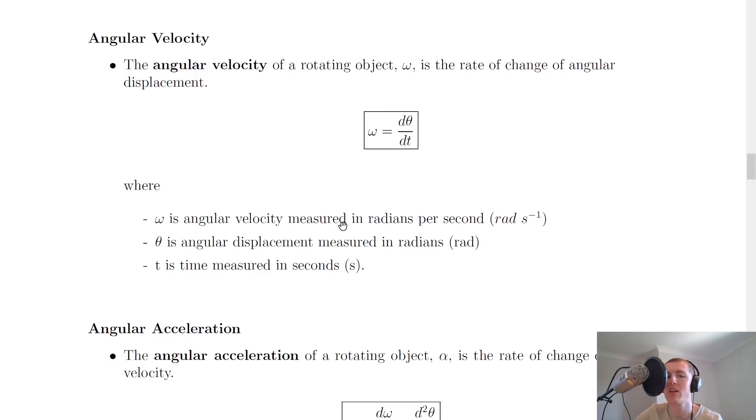So we have that omega is the angular velocity measured in radians per second, theta is the angular displacement measured in radians, and t is time measured in seconds. Notice for radians I've just put rad for short.